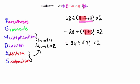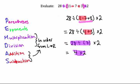Now I have only two steps left: division and multiplication. I'll do division first because it appears first reading left to right — even though multiplication is listed first in PEMDAS, they are equal priority. So 28 divided by 7 is 4, times 2. That equals 8. Order of operations gives a final answer of 8.